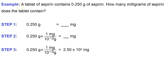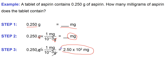Here's a good example — a single-step conversion. A tablet of aspirin contains 0.25 grams of aspirin. How many milligrams of aspirin does the tablet contain? On the left, I write what I'm given, and on the right I write the units for what I want. My conversion factor always has the given units on the bottom line — it's always a fraction. In this case, 1 milligram over 10 to the minus 3 grams will be my conversion factor. Grams cancel out, leaving milligrams, and I get my answer. I chose to express it in scientific notation.